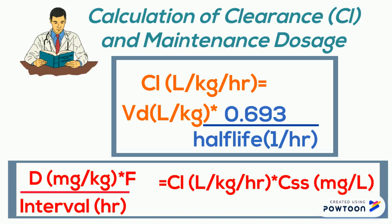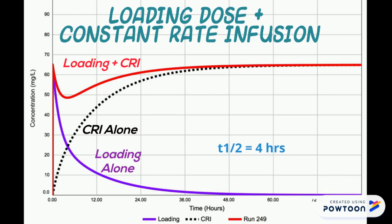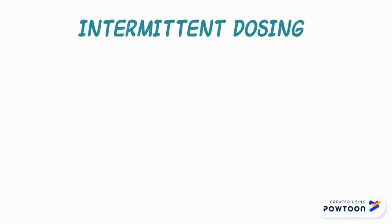Returning to dosing regimens: if we seek rapid achievement of a given concentration and want to maintain that concentration, we can add a loading dose to a constant rate infusion — CRI — designed to maintain the same concentration. This graph, calculated from a two-compartment model of a drug with a half-life of four hours, shows the early dip due to distribution of the IV bolus loading dose before the CRI fully comes into play, essentially creating a square wave where the loading dose rapidly achieves the desired concentration and the CRI maintains it.